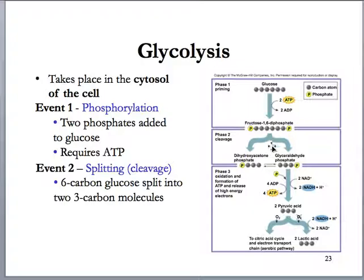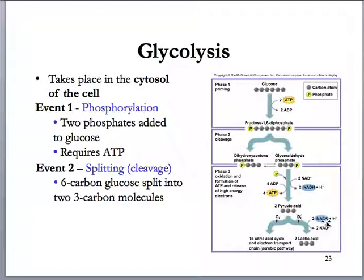The second phase is the cleavage phase — cleavage means we're breaking bonds. We go from one six-carbon molecule to two three-carbon molecules. Each one of these will undergo the third phase of glycolysis, which is where we get our energy back — ATP energy back. I call it the energy harvesting phase; the textbook calls it oxidation and formation of ATP.